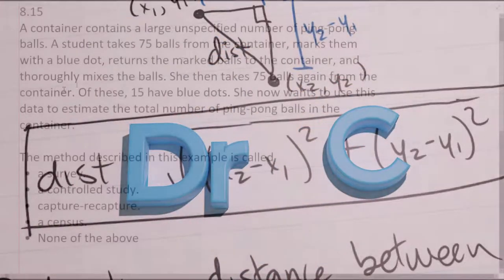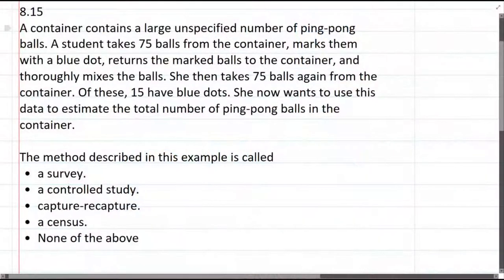On this problem we have a container containing a large unspecified number of ping-pong balls. There are 75 balls taken from the container, and these are taken at random. It doesn't mention that, but it says taken from the container.